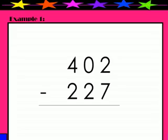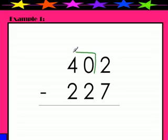With subtraction, we always start by subtracting the ones column. Right away I notice I have more on the floor, so I need to go next door and get 10 more. Well, when I try to get 10 more, I see that I have zero tens. I'm going to teach you a trick.